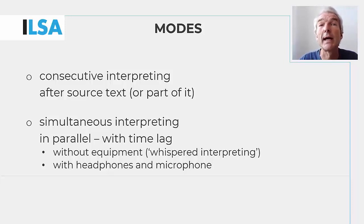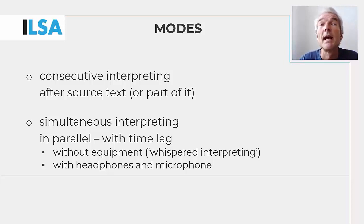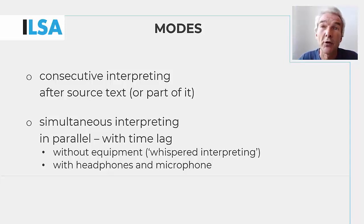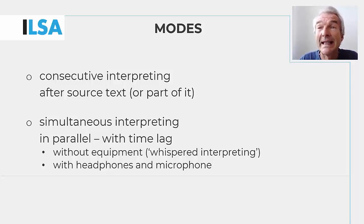These two basic modes are known as consecutive interpreting and simultaneous interpreting. Consecutive is the primeval, the basic mode of interpreting, and means that the interpretation comes after the source text or a part of it. This mode is typically found in dialogic communication, but can also be used for longer speeches, in which case interpreters will rely on a special note-taking technique to support their memory of what they need to render.